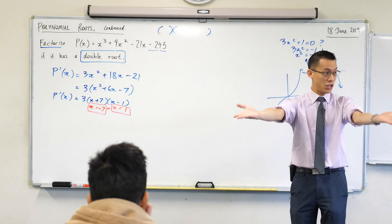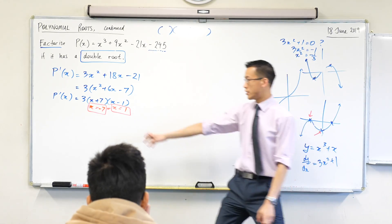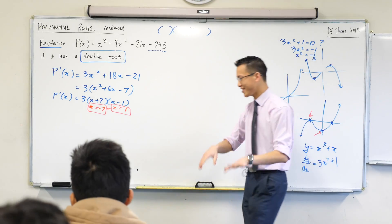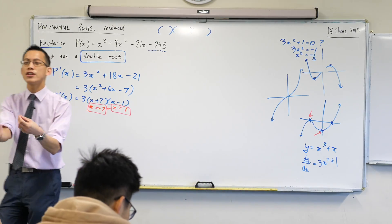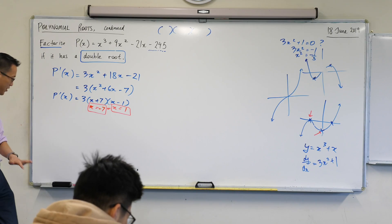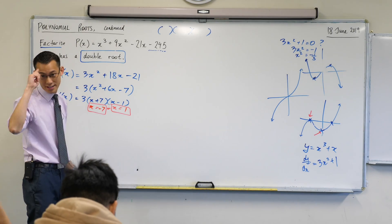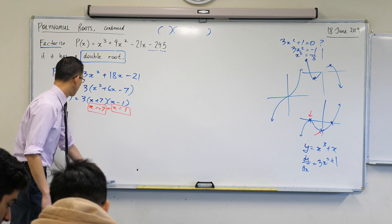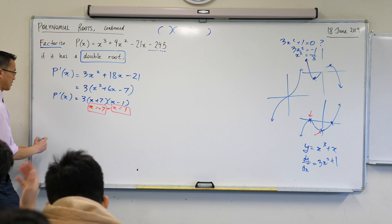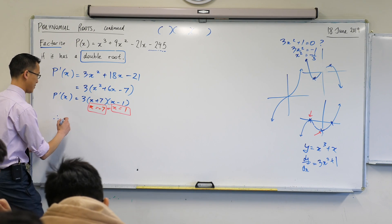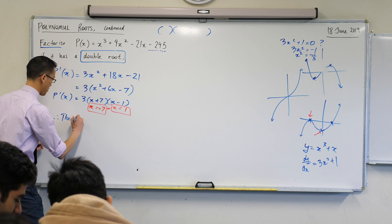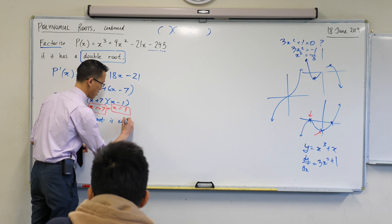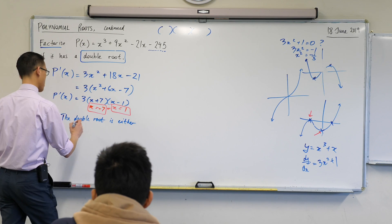In pairs, test out both values by substituting into the original polynomial. Go ahead and use your calculator. You should find one gives zero, confirming it is a factor and therefore the double root.